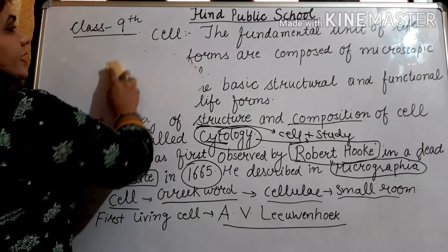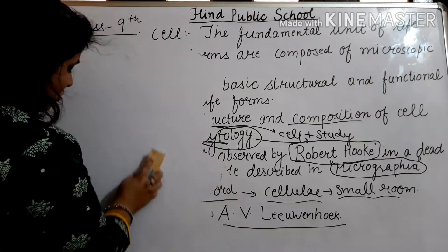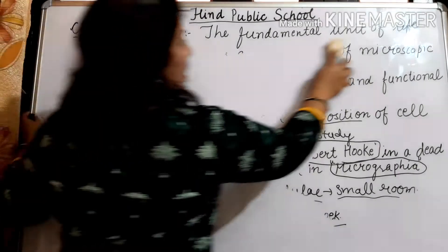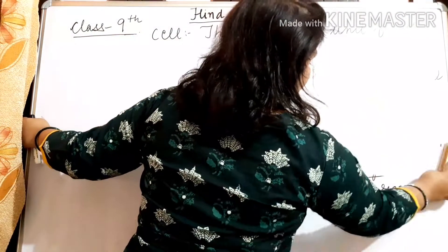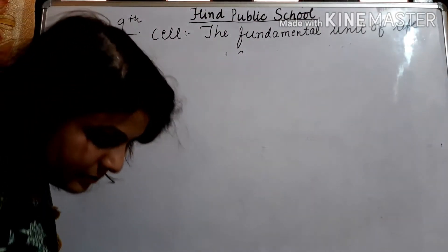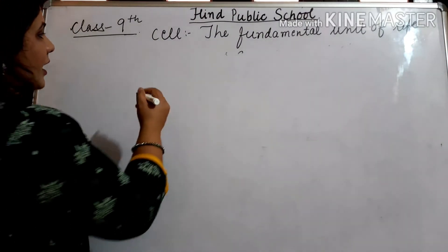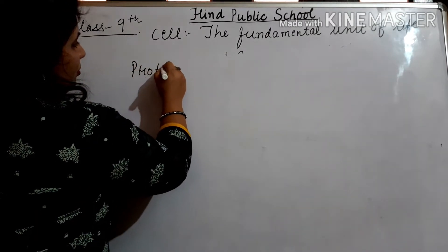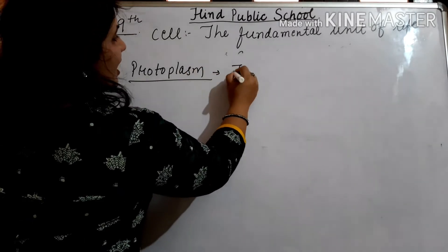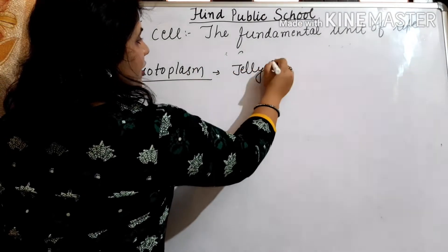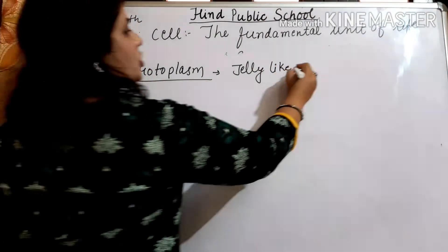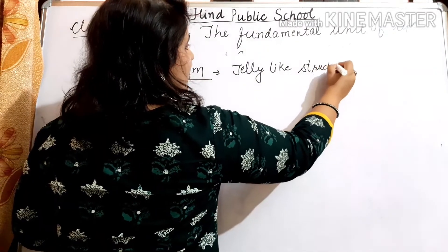Cell ki andar kya hota hai? Cell ki andar ek liquid material bhara hua hota hai, jisko bolte hain life liquid. Aur uska naam hai protoplasm. Us liquid ka naam hai protoplasm — ek jelly-like structure hota hai, jo ki semi-liquid hota hai.